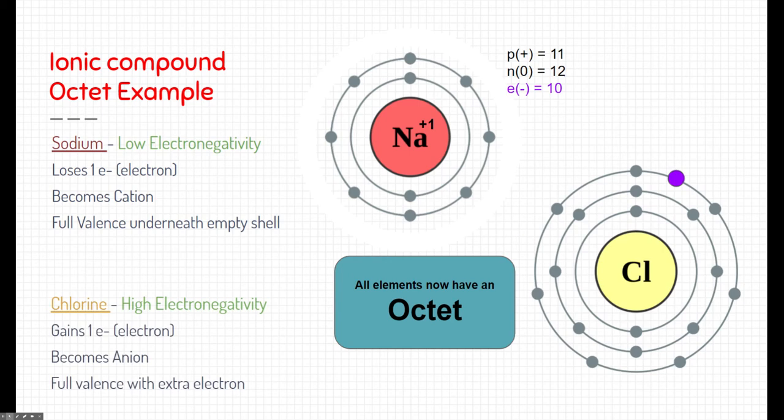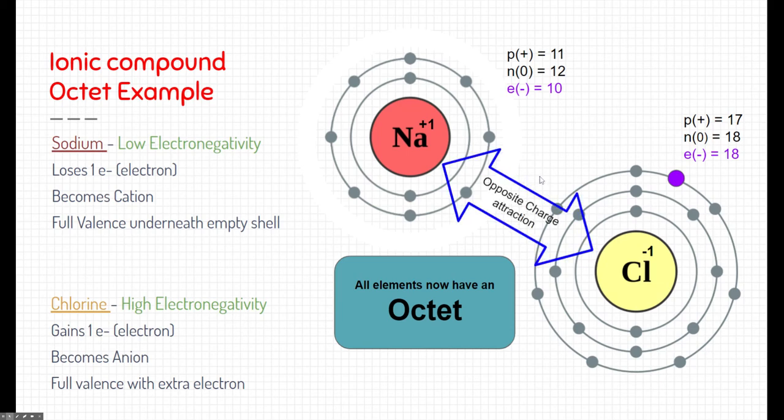Now, chlorine, being high electronegativity, gains that negative electron. Because it gains an extra electron, it has a change of charge. In fact, now it's negatively charged. It becomes an anion. Now, it also gains a full valence because now its outer shell has a full amount, or eight electrons. These two elements are now attracted to each other because of those charges. Remember, opposites attract. And this is the main concept behind ionic compounds.